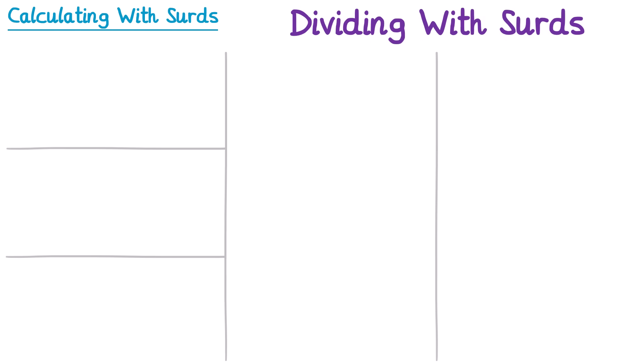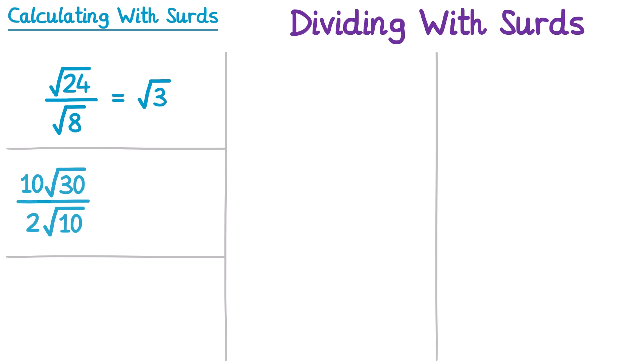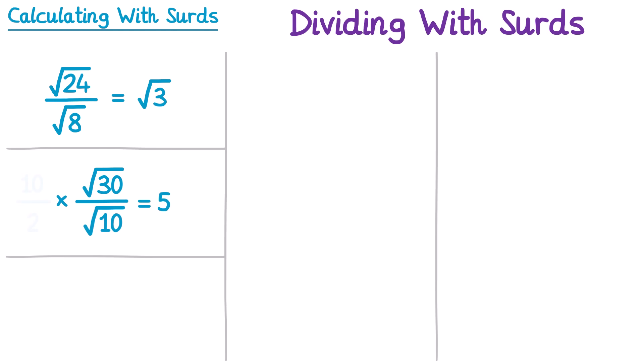Now let's look at some questions where we divide with surds. As a reminder, the square root of 24 divided by the square root of 8 is just the square root of 3, since 24 divided by 8 is 3. What about 10 root 30 over 2 root 10? We can write this as the product of two fractions: 10 over 2 times the square root of 30 over the square root of 10. Ten divided by 2 is 5, and the square root of 30 divided by the square root of 10 is the square root of 3. So the answer is 5 root 3.